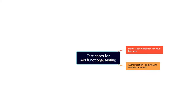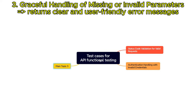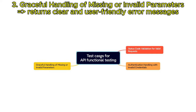The third test case is to check the graceful handling of missing or invalid parameters. Verify that the API handles missing or invalid request parameters gracefully and returns clear and user-friendly error messages that aid in troubleshooting.